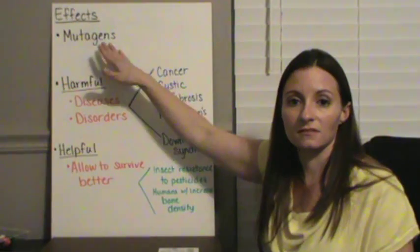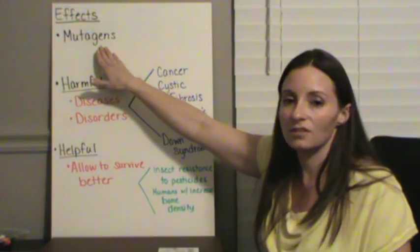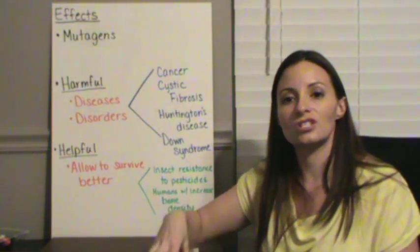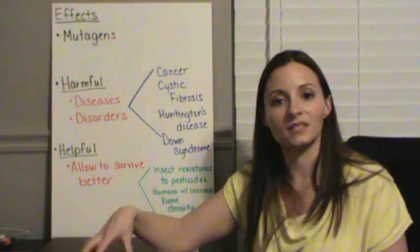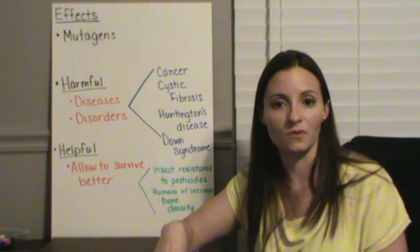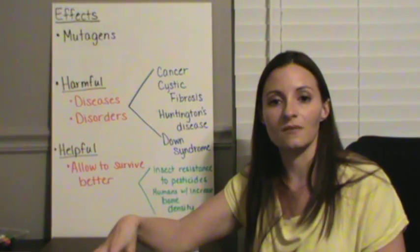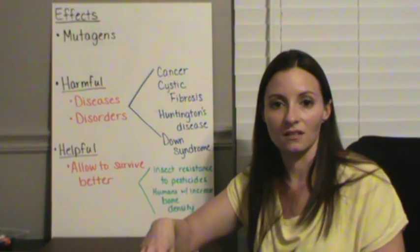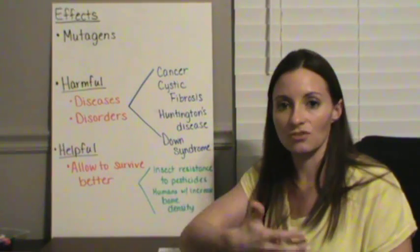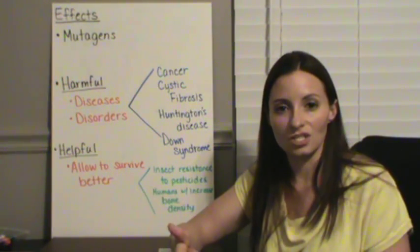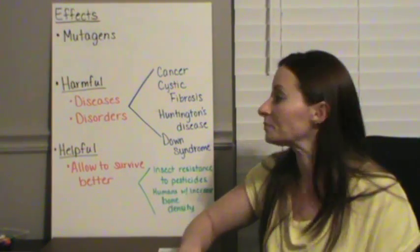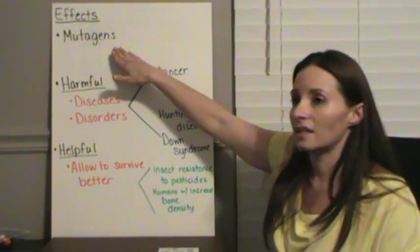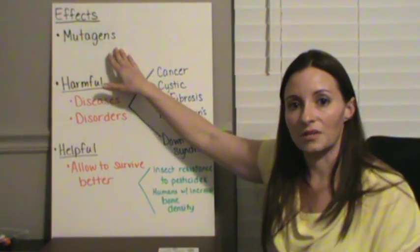So the effects of mutations. First of all, the term mutagen. A mutagen is something in the environment or a chemical or something that actually causes the mutation within our body. So we could have something that caused the mutation that wasn't naturally within our body. Chemicals, radiation, other environmental things that happen. So anything that causes a mutation is called a mutagen.